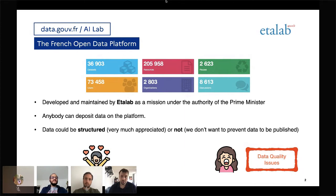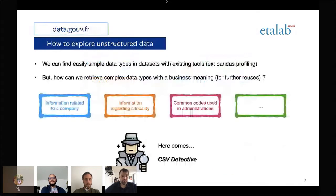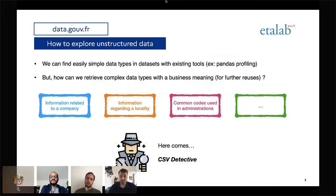I will talk about these data quality issues for the presentation, and how we can explore unstructured data. This is important for different users on the Open Data Platform who want to know what is inside a specific file or resource. There are many tools in the literature for retrieving simple data types, like whether a column is an integer, a date, or a string. For instance, we have tested recently Pandas profiling, and there is a session tomorrow which will talk about our experiment around these tools. It is a great tool to find simple data types.